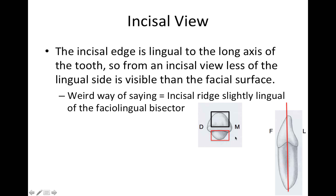Let's take a look at the incisal view. The incisal edge is lingual to the long axis of the tooth — you can see the incisal edge is more towards the lingual side. If you look from an incisal view, there's more on the facial side than on the lingual side. A way you might see this phrased on the boards: the incisal ridge is slightly lingual to the facial-lingual bisector.